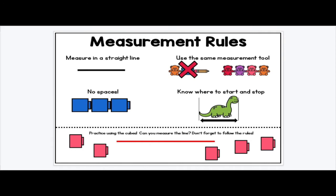Here are some of our measurement rules. Always measure in a straight line. You never want to go in a curve because it's not going to be accurate. So always use a straight line. Make a straight line with your hand.